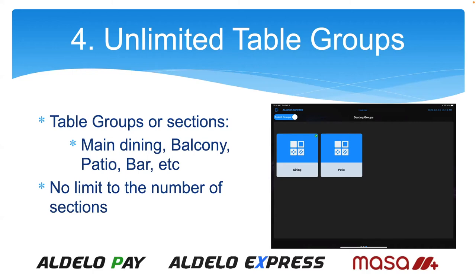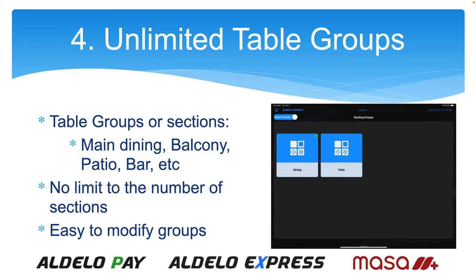It makes it much easier to identify and work within those groups. You can also easily modify those groups. During certain times of the year you'll need more two-top tables than four-tops — for instance, in the February timeframe around Valentine's Day, the restaurant's going to have more two-top tables than four. So they would easily modify those groups to depict that actual layout.